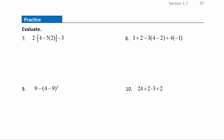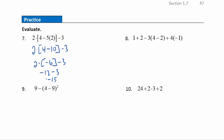Practice question seven: starting inside the brackets, we do multiplication first. 5 times 2 is 10. Then 4 plus (−10) inside the bracket gives −6. Now we have multiplication and subtraction: 2 times −6 is −12, and −12 minus 3 gives a final answer of −15.